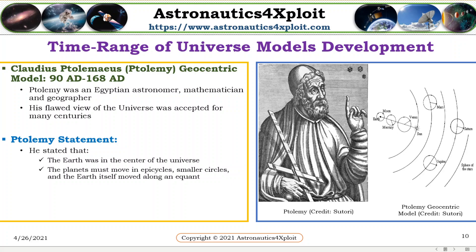Claudius Ptolemus, simply known as Ptolemy, proposed geocentric model. Ptolemy was an Egyptian astronomer, mathematician, and geographer. Its flawed feel of the universe was accepted for many centuries. It stated that the heart was in the center of the universe. The planets must move in epicircles, smaller circles, and the heart itself moved along an equant.